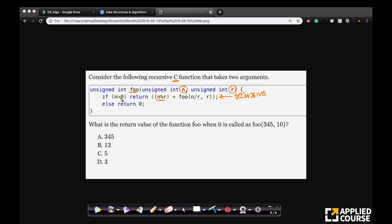Else, return 0. If n is equal to 0 or less than 0, it says return 0. Now, the question here, very simple function. What is the return value of the function if we call foo 345 comma 10?